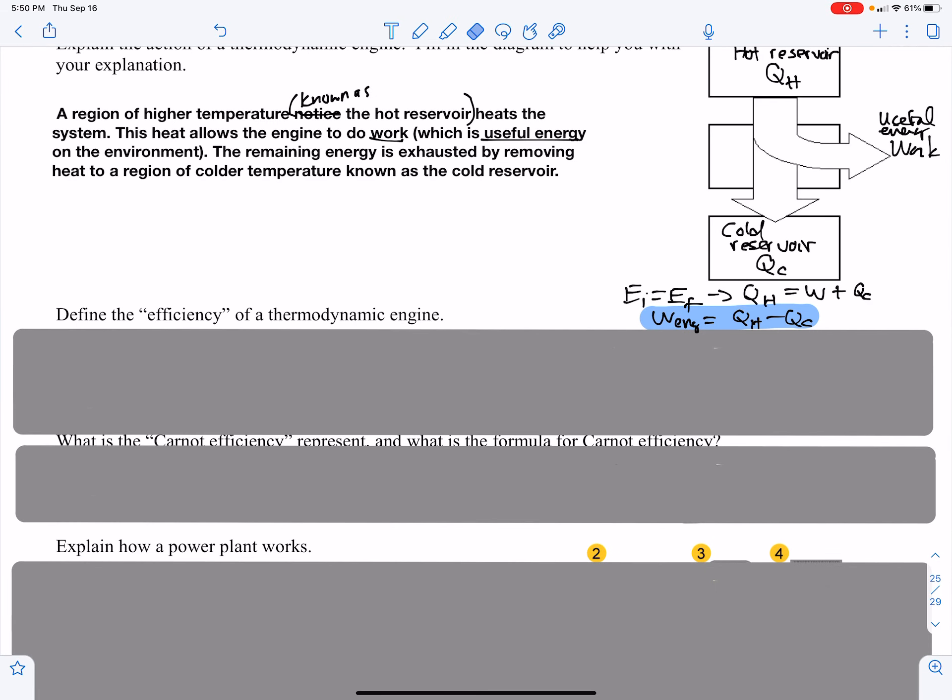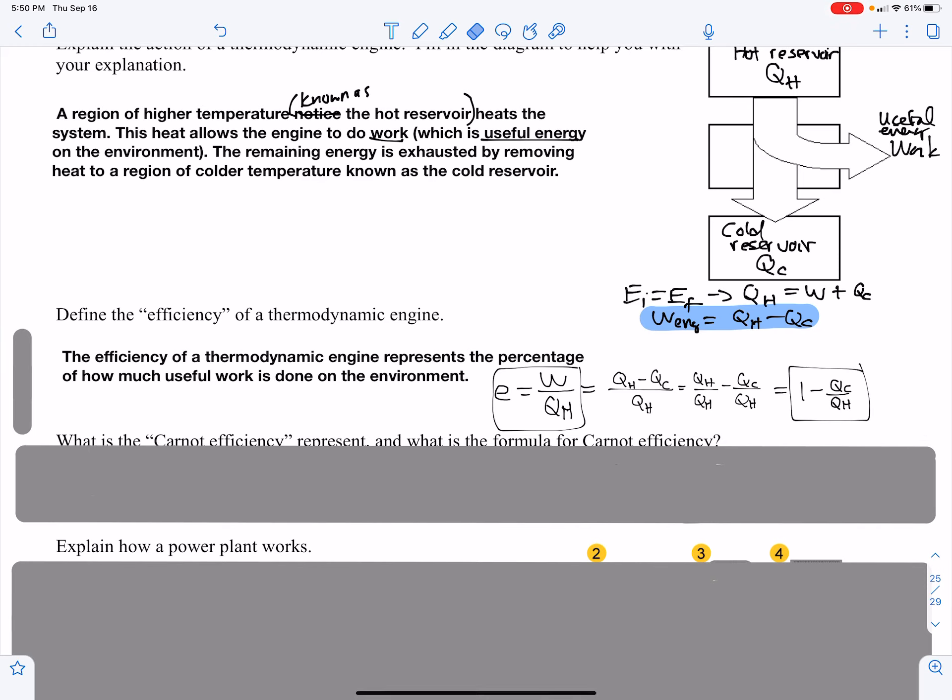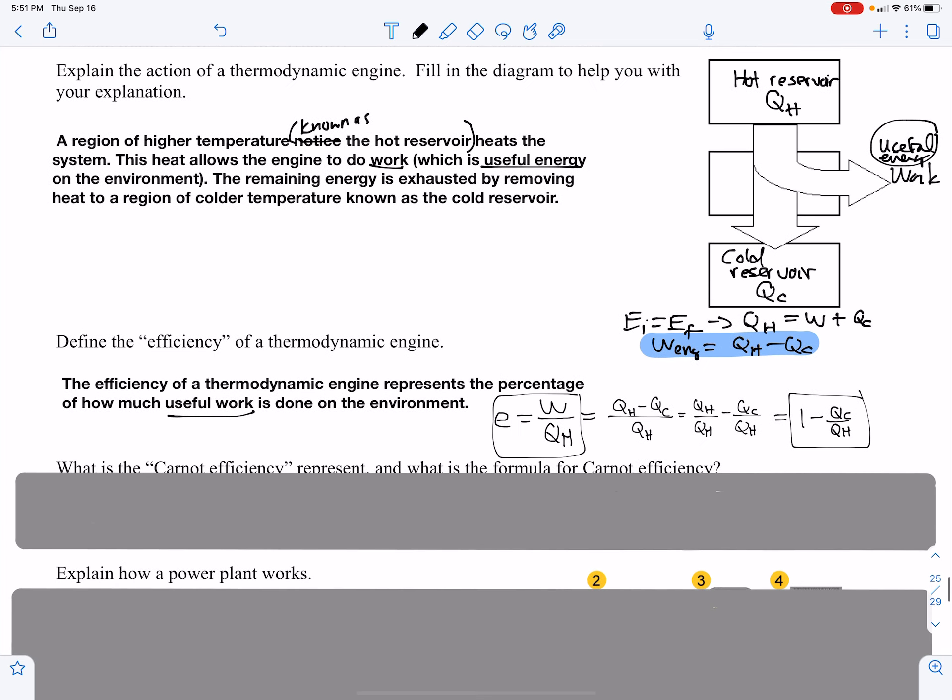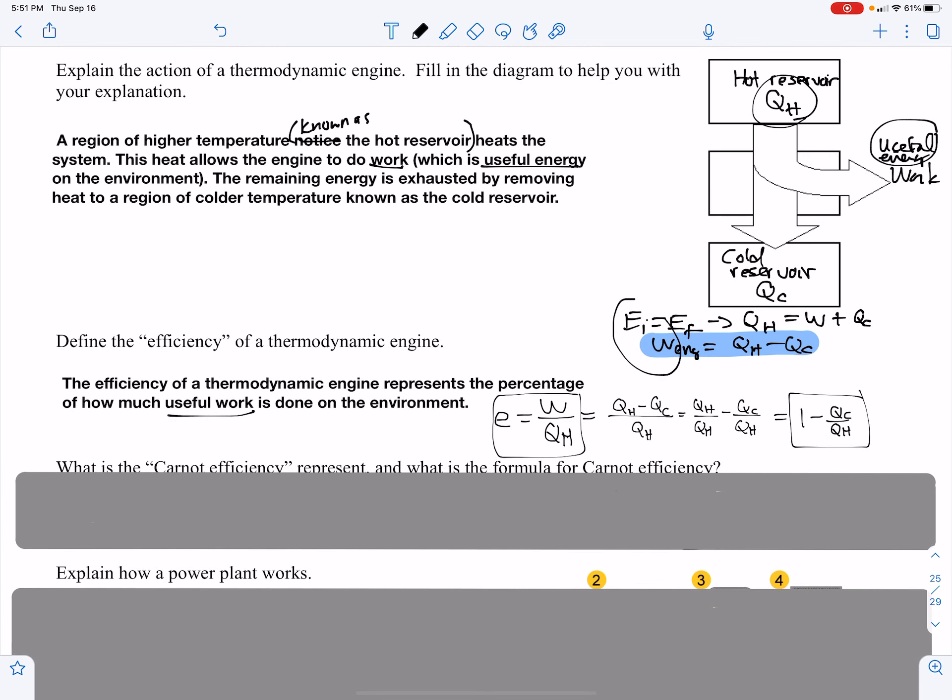Define efficiency. Efficiency of an engine represents the percentage of useful work. Well, percent means part of the whole. So if we take the useful work divided by the total energy, QH, we get a percentage of the total energy, or a useful percentage.